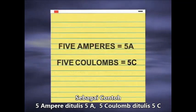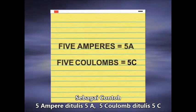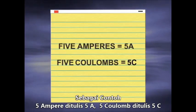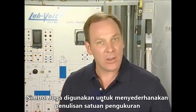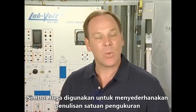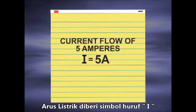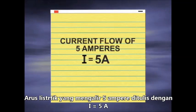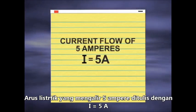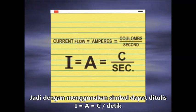For example, 5 amperes is written as 5A and 5 coulombs is written as 5C. Symbols are another shortcut used to identify what's being measured. For example, electrical current is shown by the symbol I. Therefore, a current flow of 5 amperes would be written as I equals 5A, using the formula I equals A equals C per second.